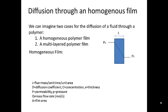Hello and welcome to Topic 6, Part 2 on Polymer Permeability. In this part of the lecture, we're going to discuss two different scenarios where a gas would want to diffuse through a polymer membrane. The first scenario involves a homogeneous polymer film, where the entire thickness of the polymer membrane is one continuous material. The second scenario involves a multi-layered polymer film, which as we'll see is actually quite common.